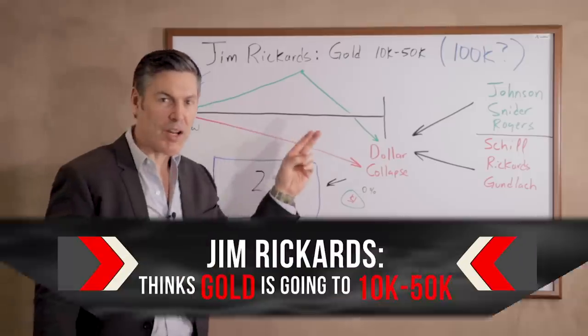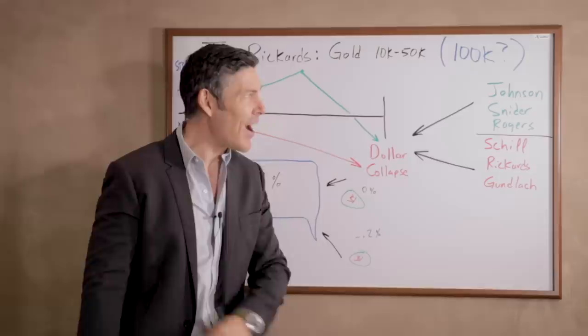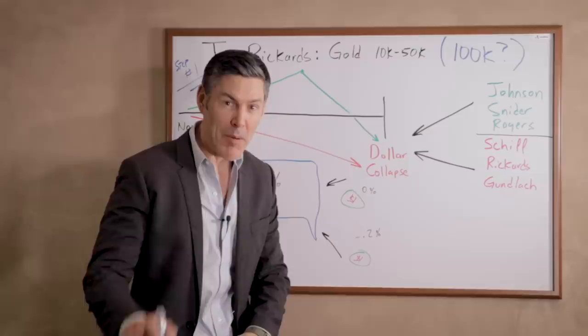Jim Rickards thinks gold is going to $10,000 to $50,000 an ounce. I think it might even go higher than that, up to $100,000 an ounce. I'm going to tell you why right now in three simple fast steps, starting with step number one.